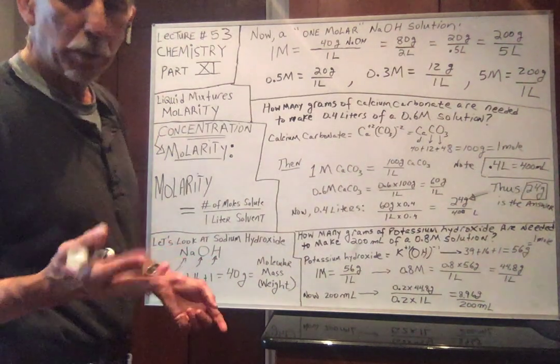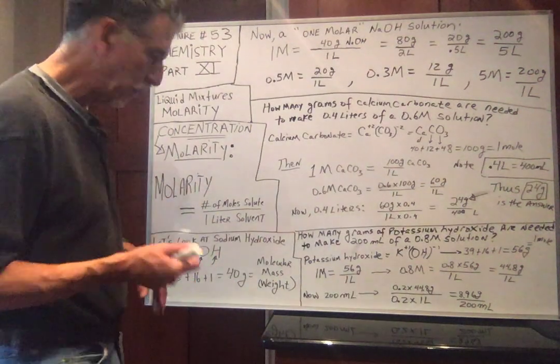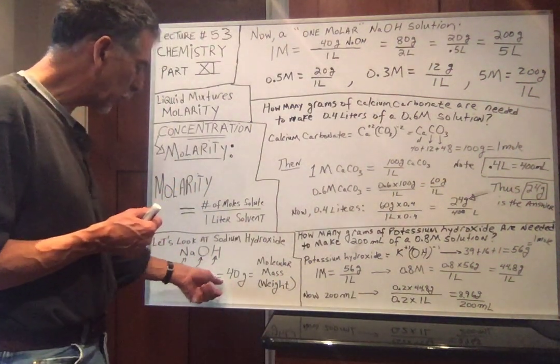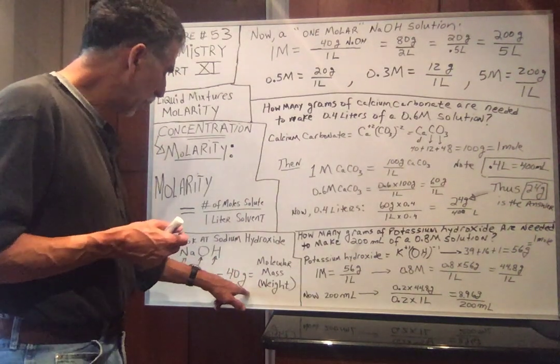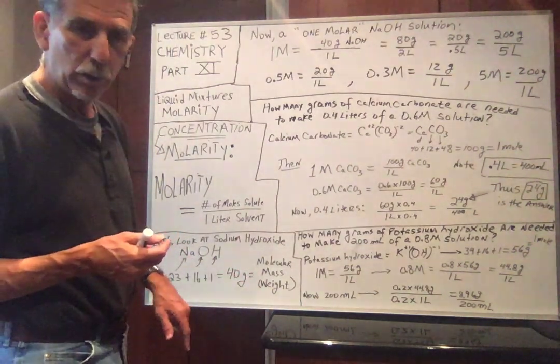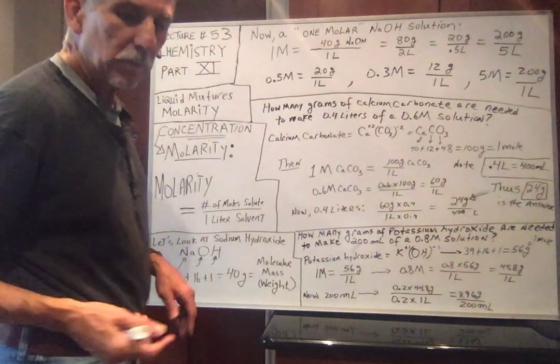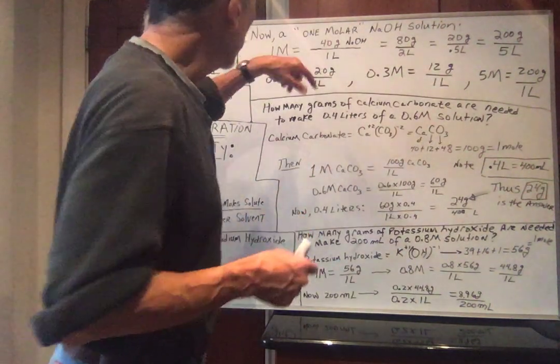Hope you're getting to learn a couple of these because we do it so much. Oxygen is 16. So 23 plus 16 plus 1, the molecular mass or molecular weight of sodium hydroxide is 40 grams. We should be experts on this by now. All right, let's go.